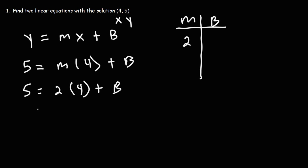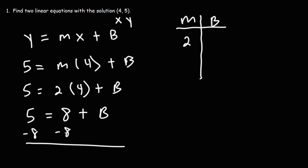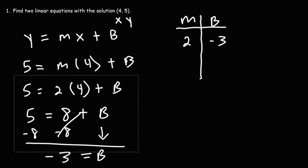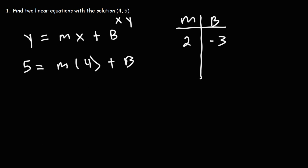If m is 2, then 2 times 4 is 8, and if we subtract both sides by 8, we get that b is negative 3. So when m is 2, b has to be negative 3. Another possibility is choosing a different value for m — let's say m is 3. What's b going to be?